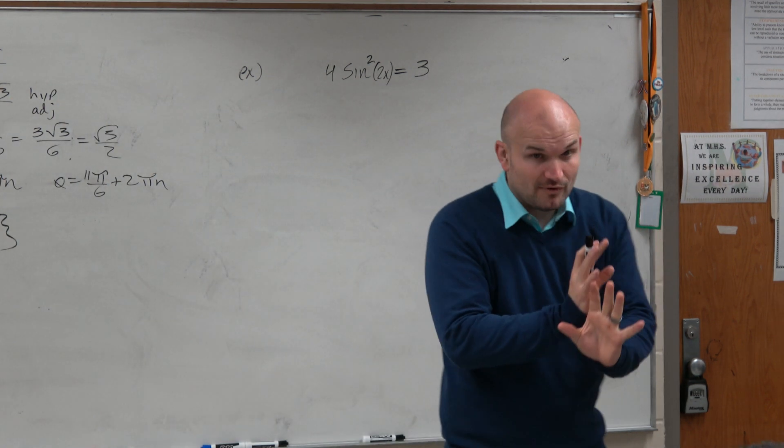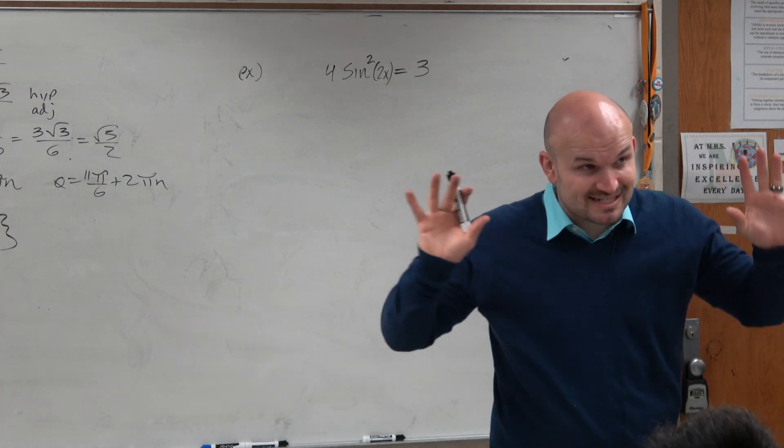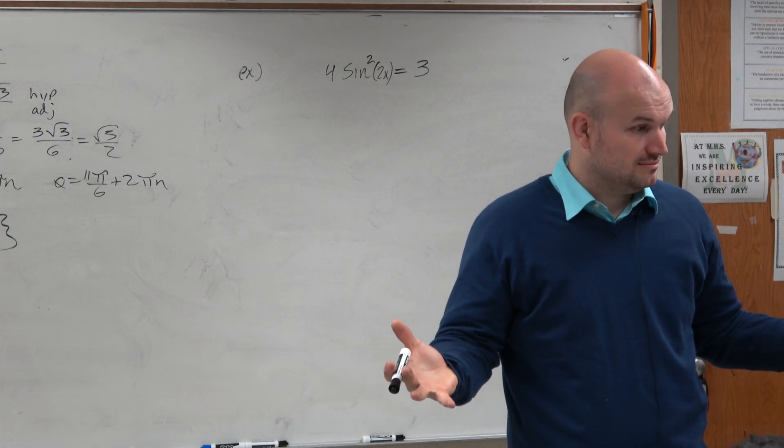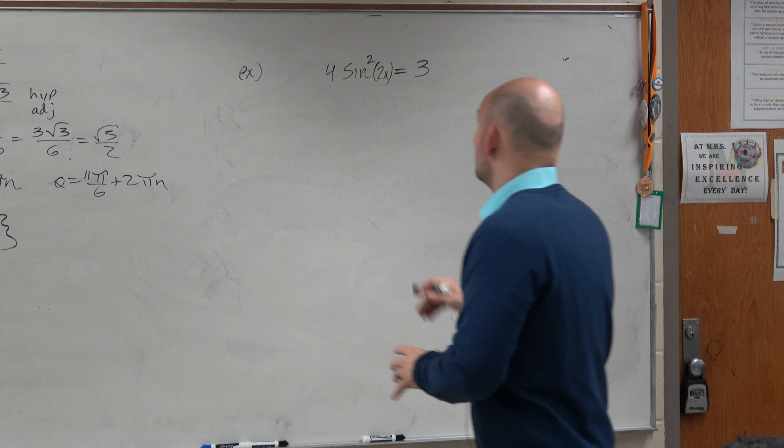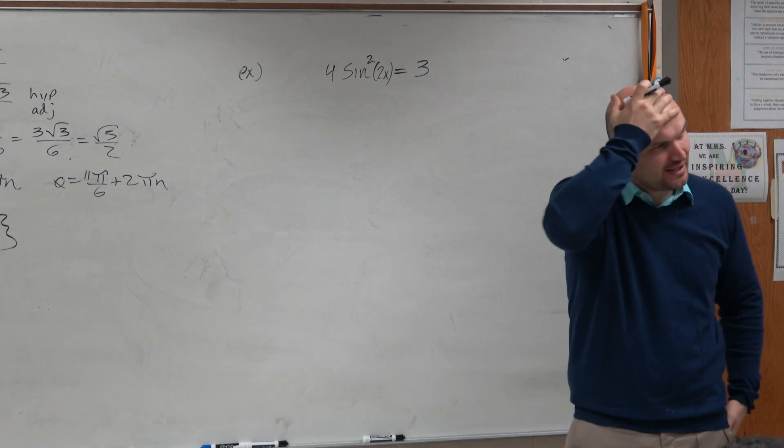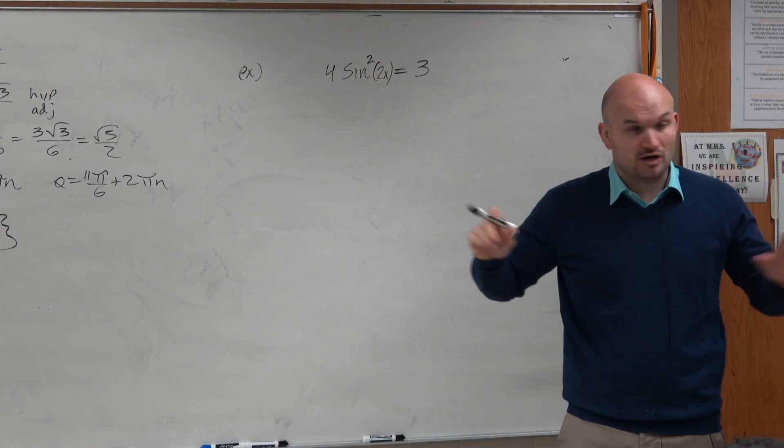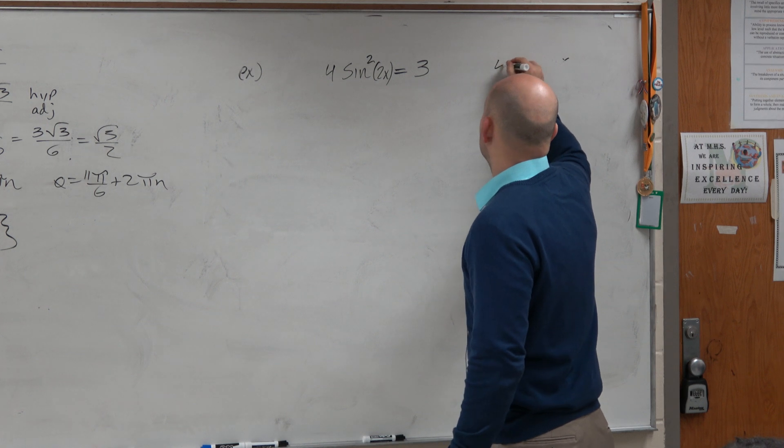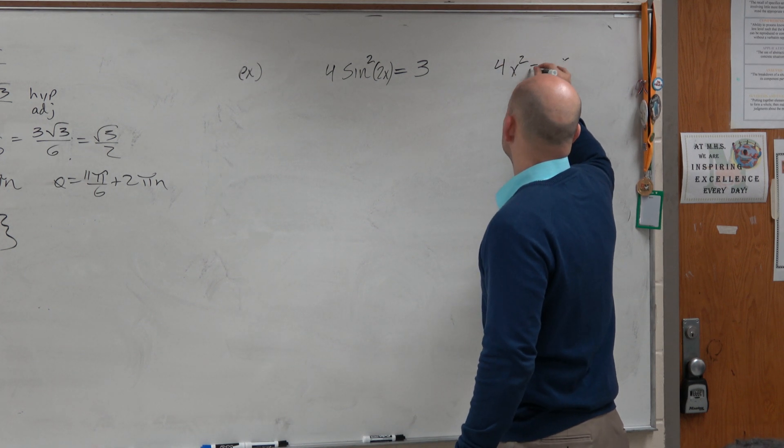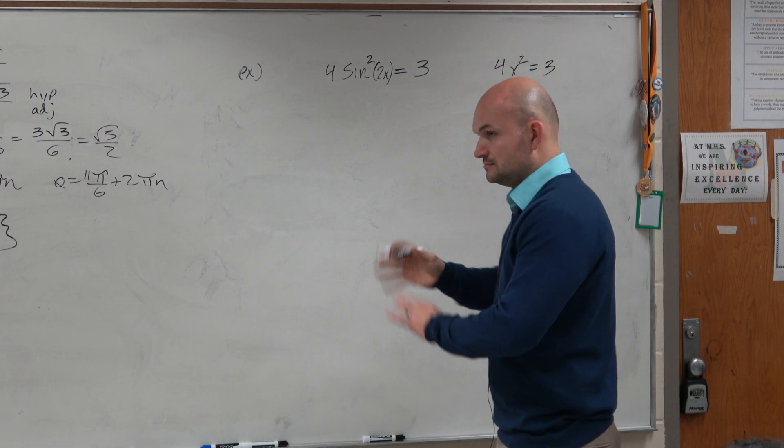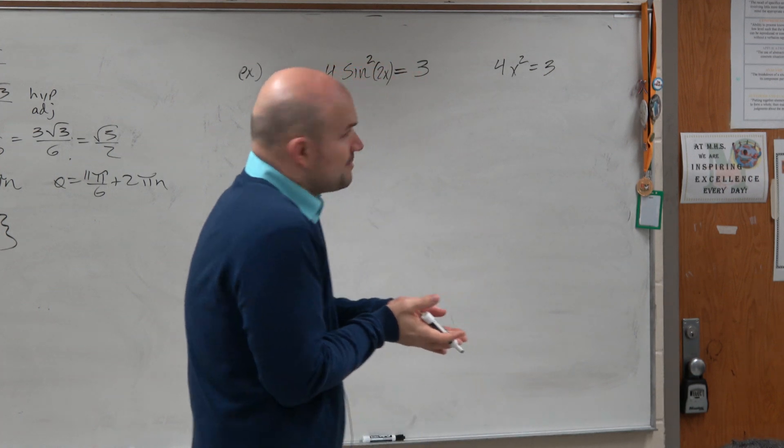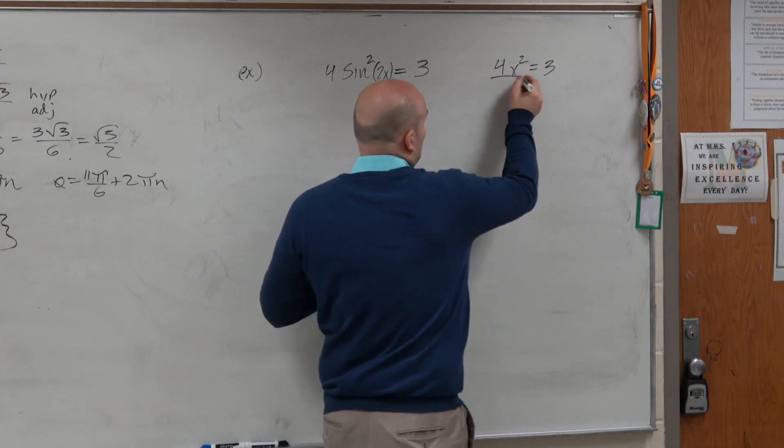Now again, just like we've done before, all the algebra in this class is not above algebra 1. So if you get stuck, forget there's trig involved and just replace it with an x. Say 4x squared equals 3. All right, I'm just going to solve from here. In algebra 1, what do we do? We just divide by 4.